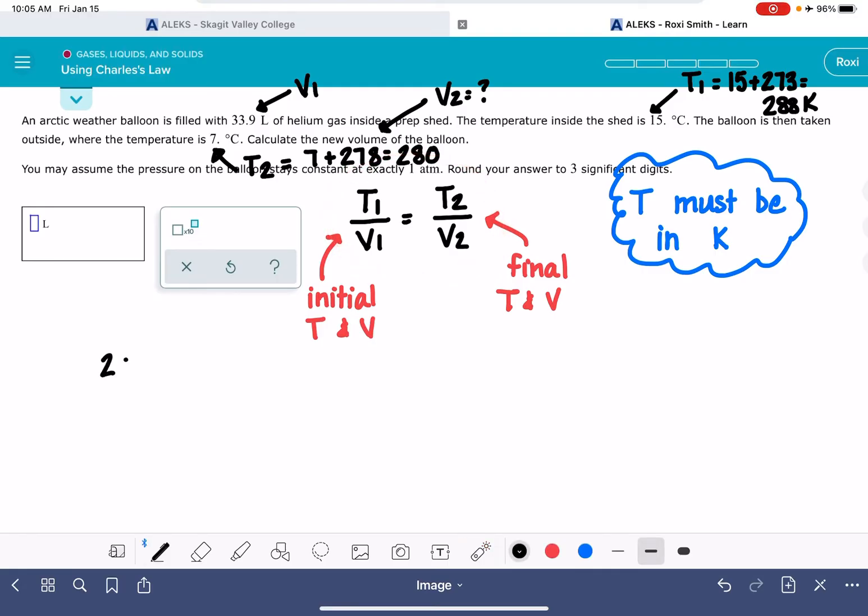So let's go ahead and plug these variables into this equation right here. Our T1, 288 Kelvin over V1, 33.9 liters. And that is equal to our T2, 280 Kelvin over V2, which is our unknown.